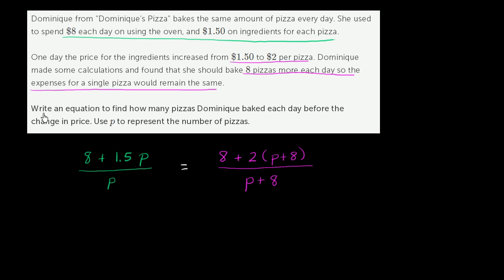So we've written the equation: (8 + 1.5P)/P = (8 + 2(P+8))/(P+8). That answers what was asked. Now let's actually solve for P. To simplify, we cross-multiply — multiply both sides by P and by (P+8).